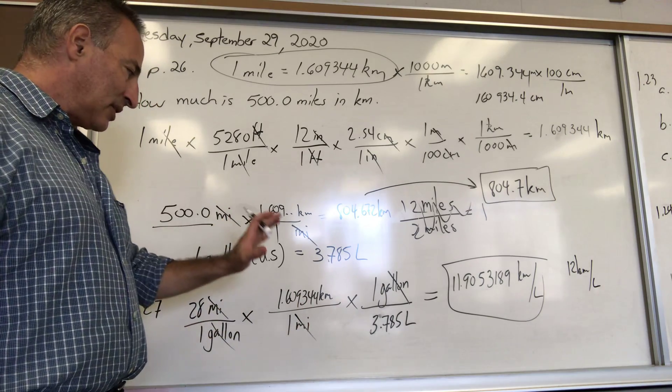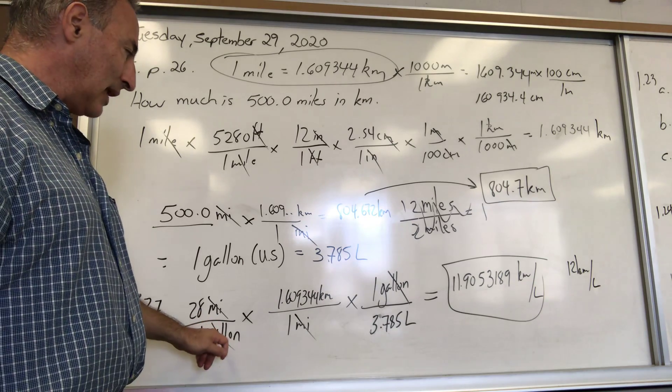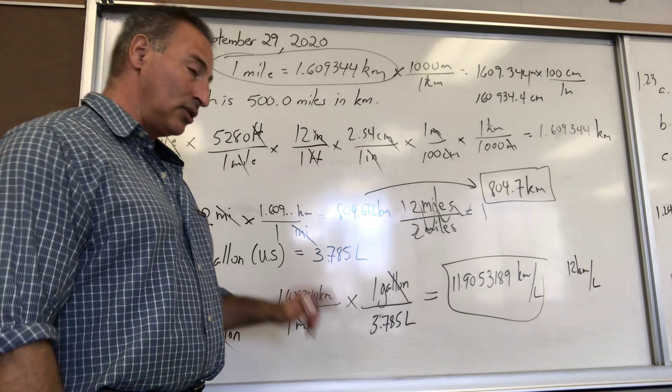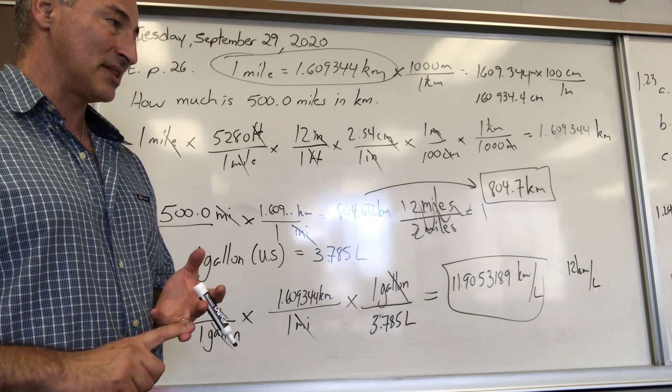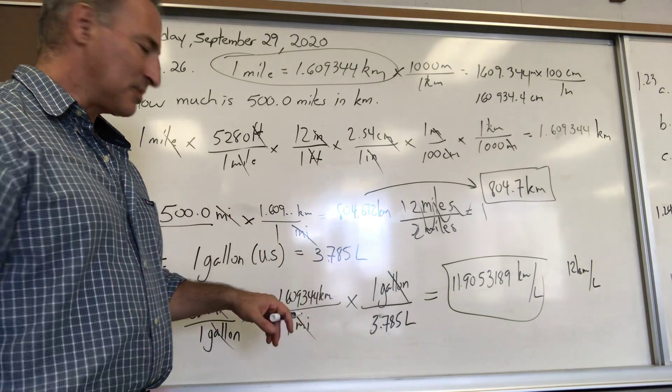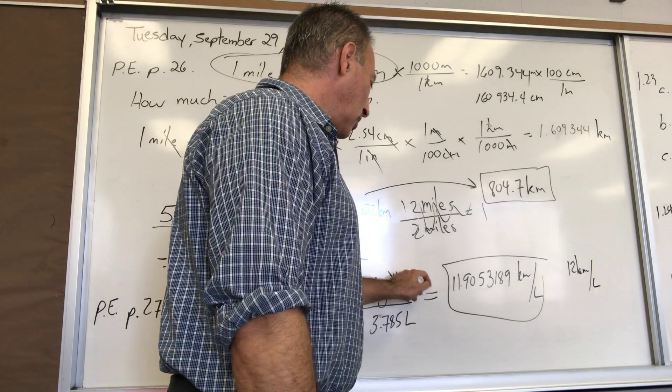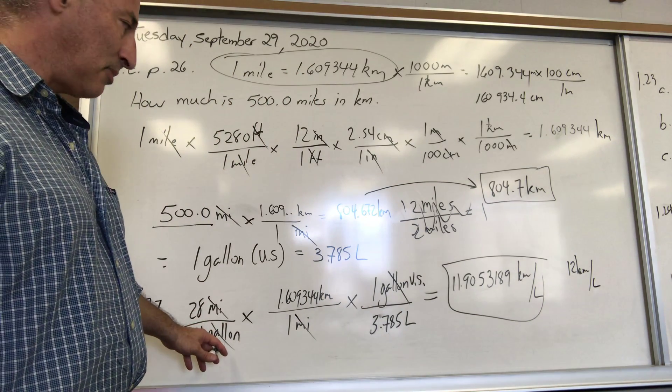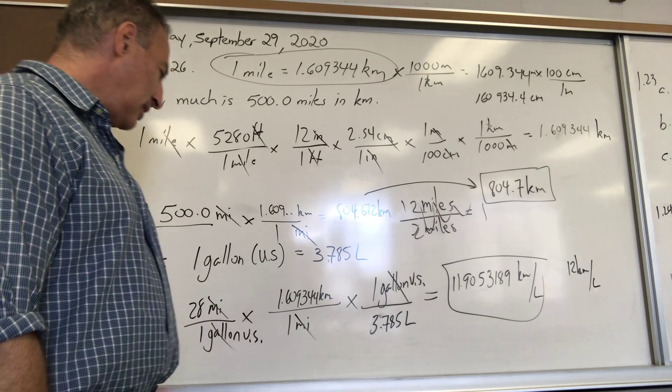We know the conversion factor is 1.609344 kilometers per mile—that allows me to cancel miles. Now let's do the second conversion factor. We want to get rid of gallons. The conversion factor between gallons—U.S. mind you, because there's two types of gallons, imperial and U.S.—is one U.S. gallon per 3.785 liters.